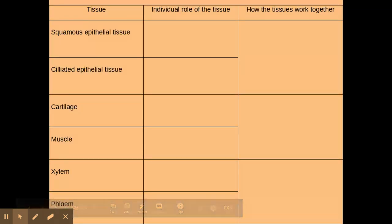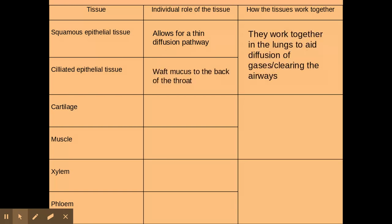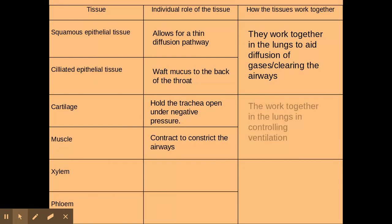So these are the examples you need to know in your specification. Squamous epithelial tissue allows for a thinner diffusion pathway, and ciliated epithelial tissue wafts mucus back to the back of the throat — these two tissues work together in the lungs. Cartilage holds the trachea open during negative pressure, and muscle constricts the airways; again they work in the lungs to help control ventilation, which you'll learn more about on exchange surfaces.